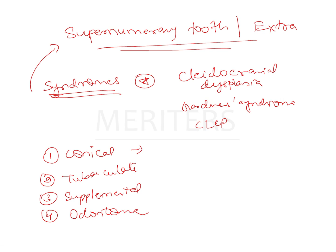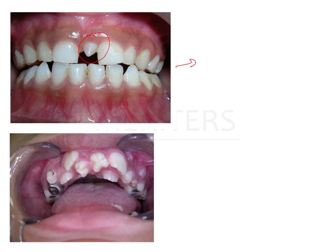Conical is basically a small peg-shaped or conical-type tooth, usually seen in the permanent dentition. The mesiodent is a very classical example of a conical supernumerary tooth. It is usually seen along the midline of the maxillary arch and is usually single in number. As seen in this image, this is a conical-type supernumerary tooth — a mesiodent present along the midline of the maxillary arch.